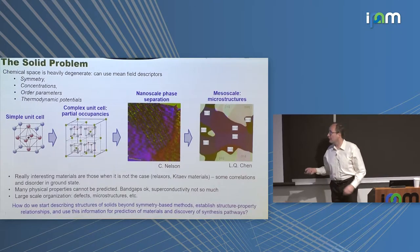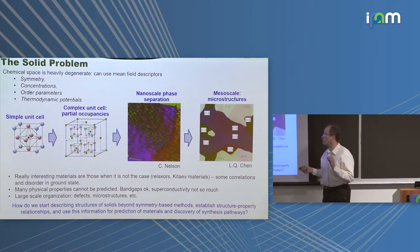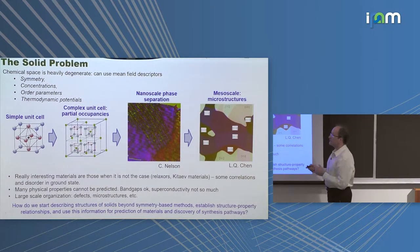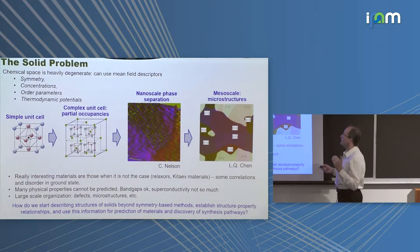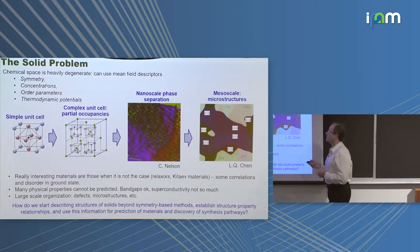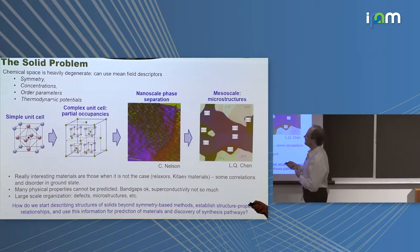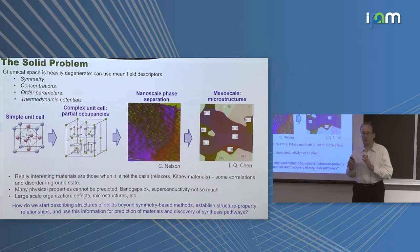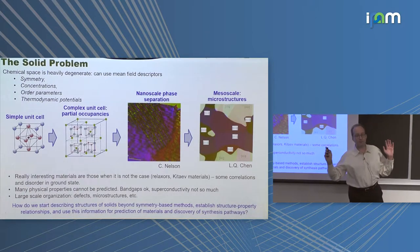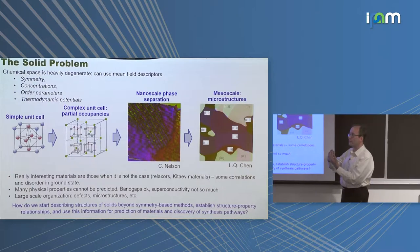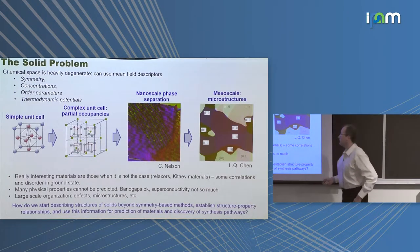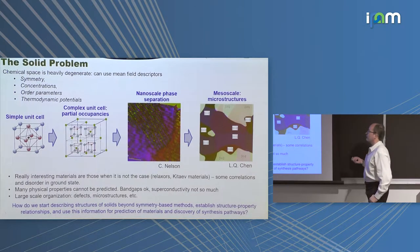Is science hopeless? And of course, science is not hopeless. The reason why science is generally not hopeless is because very often we can go pretty far if we start to discuss solid materials essentially using mean field descriptors. For example, symmetry, concentration, order parameter, corresponding thermodynamic potential.